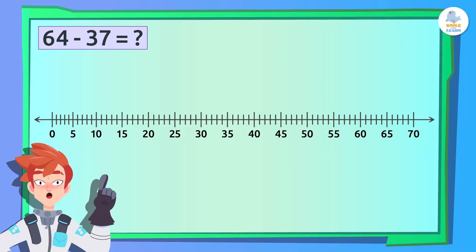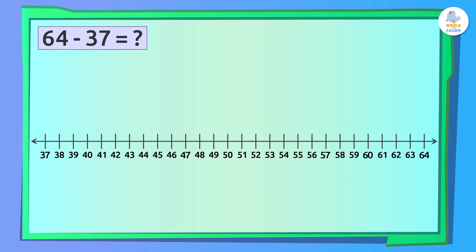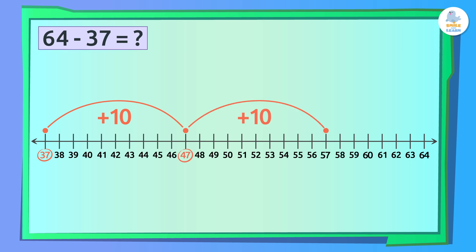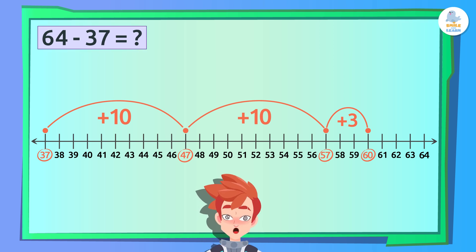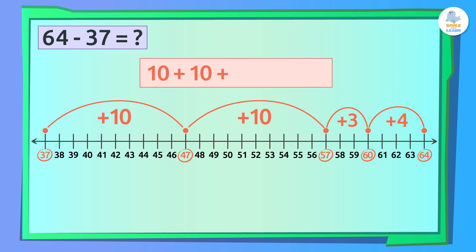We start at 37 and jump forward until we get to 64. First, we jump 10 to get from 37 to 47. Another big jump of 10 takes us to 57. Next, we'll make a small jump of 3 to get to 60. We're going to get dizzy with so much jumping! Finally, we make a small jump of 4 to get to 64. Let's count! We add up all the jumps we made. 10 plus 10 plus 3 plus 4 gives us 27.